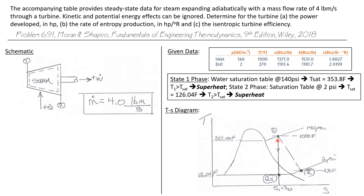The process for an isentropic turbine goes from state one to state 2S. State 2S still has the same final pressure as the actual process. But S2S equals S1, so this is a vertical line on the T-s diagram. This process might end in the superheat region or in the saturated mixture region. As we'll see from the calculation, state 2S is indeed a saturated mixture state.